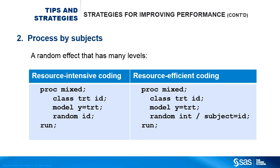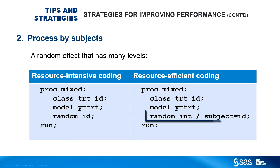Suppose your model has a random effect ID that has many levels. You can use the RANDOM ID statement in PROC MIXED to specify this random effect, but this can be resource intensive. Instead, if you can use the SUBJECT= option in the random statement — that is RANDOM INTERCEPT / SUBJECT=ID — you are fitting the same model, but the SUBJECT= option enables the procedure to process the model by subjects and therefore is more numerically efficient.